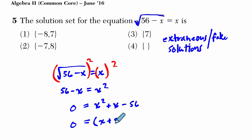I'm going to use +8 and I'm going to use -7 because 8 times -7 is -56. And that means that x could be -8 or x could be 7.